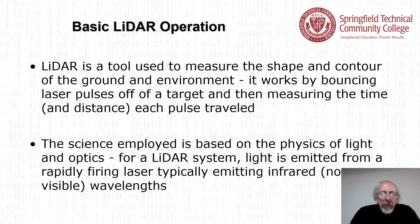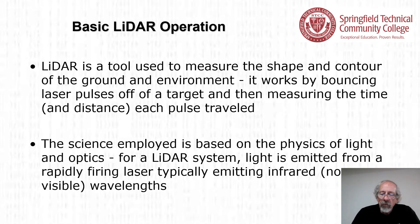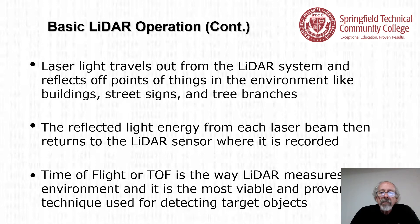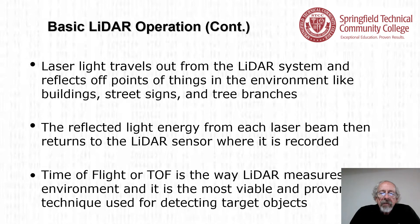LiDAR is a tool used to measure the shape and contour of the ground and environment. It works by bouncing laser pulses off a target and measuring the time and distance each pulse travels. Light is emitted from a rapidly firing laser, typically emitting infrared non-visible wavelengths. Laser light reflects off points in the environment like buildings, street signs, and tree branches, and the reflected energy returns to the LiDAR sensor where it is recorded. Time of Flight, or TOF, is the most viable and proven technique for detecting target objects.